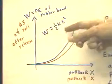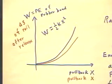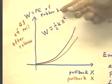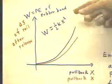If we graph W equals one-half kx squared, we get a section of a parabola. So that graphing the work or potential energy of the rubber band, which is one-half kx squared versus the pullback, gives us this blue curve.